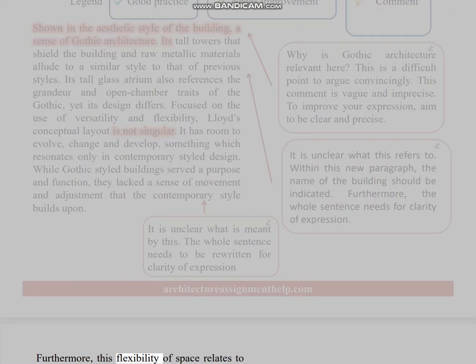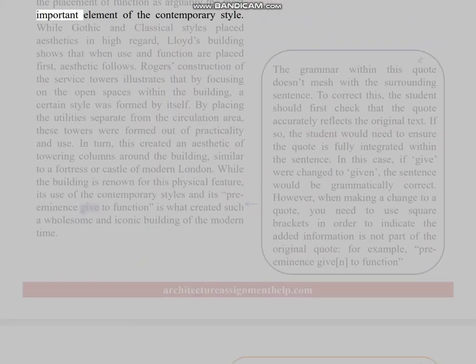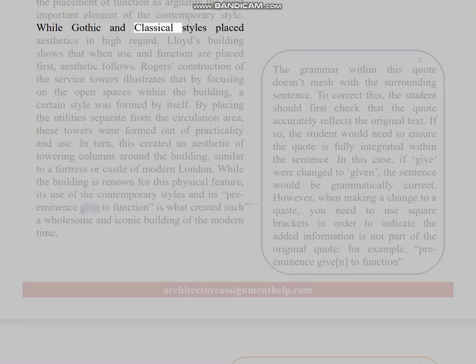Furthermore, this flexibility of space relates to the placement of function as arguably the most important element of the contemporary style. While Gothic and Classical styles placed aesthetics in high regard, Lloyd's building shows that when use and function are placed first, aesthetic follows. Rogers' construction of the service towers illustrates that by focusing on the open spaces within the building, a certain style was formed by itself. By placing the utilities separate from the circulation area, these towers were formed out of practicality and use. In turn, this created an aesthetic of—the grammar within this quote doesn't mesh with the surrounding sentence. To correct this, the student should first check that the quote accurately reflects the original text.